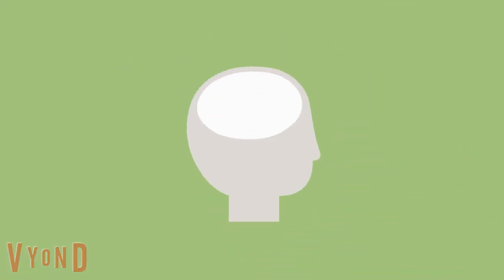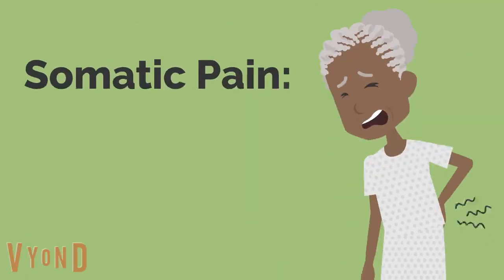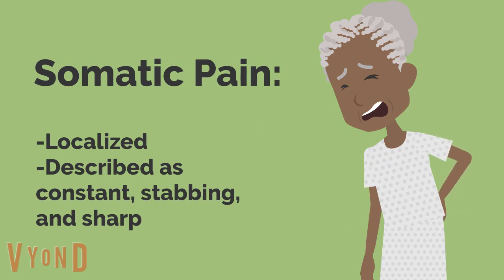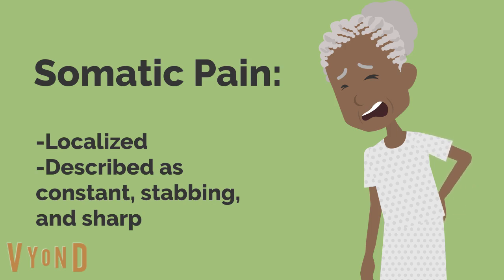Pain can be classified either by the source of the pain or the duration. Pain classifications based on the source include somatic pain, which patients usually describe as localized, constant, stabbing, or sharp pain. For example, pain from joints or muscles.